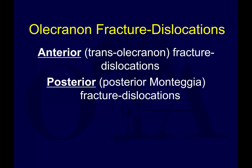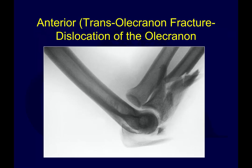In this video we're going to talk about olecranon or proximal ulna fracture dislocations, which can occur anteriorly or posteriorly. Some surgeons prefer to call these proximal ulna fractures, noting that the olecranon is really just the very proximal portion of the ulna. These fracture patterns typically occur with a very large proximal ulna fragment and behave differently than an olecranon avulsion fracture.